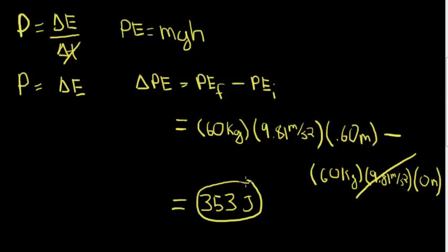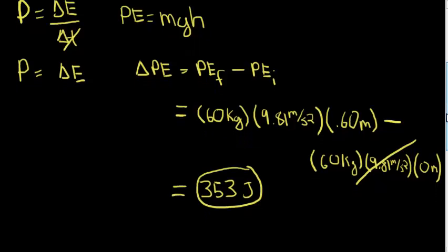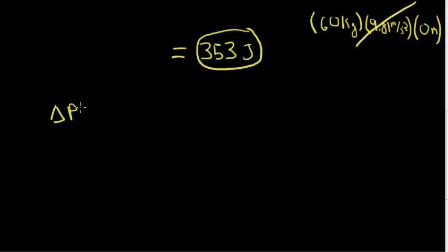Now we can do the same thing for the 90 kg jumper. We can write change in potential energy is equal to the final potential energy, which is 90 kg times gravity at 9.81 meters per second squared, times the height which is 45 cm, converted to meters, 0.45 meters.